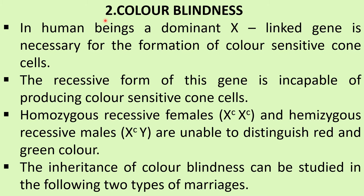The second type of X-linked inheritance is color blindness. In human beings, a dominant gene present in the X chromosome is necessary for the formation of color-sensitive cone cells. If the gene is in recessive form, it is incapable of producing color-sensitive cone cells. Homozygous recessive females (XcXc) and hemizygous recessive males (XcY) are unable to distinguish red and green color. The inheritance of color blindness can be studied in the following two types of marriages.